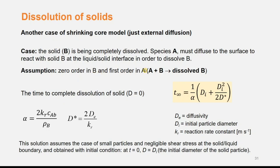In order for A to react with B, it must diffuse to the surface of the solid B. We will assume that the solid particles are spherical and express the model in terms of the diameter D of the particles. The time to completely dissolve a solid particle with diameter D-subscript-I is given by an expression where alpha is a constant depending on the reaction rate, bulk concentration of A, and molar density of solid B, and D-star is defined as the diameter when mass transfer resistance and reaction resistance are equal.